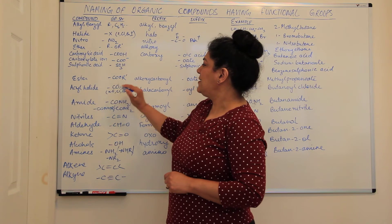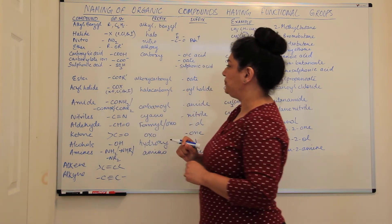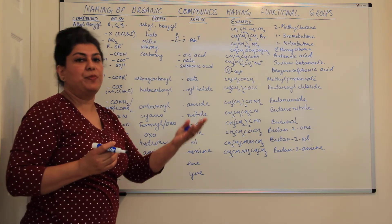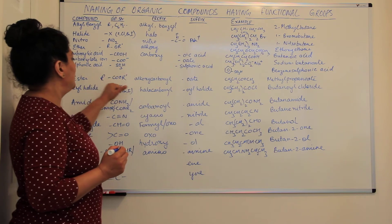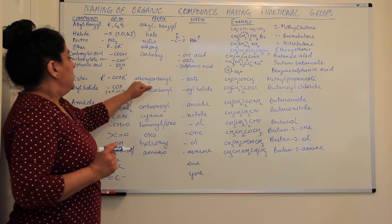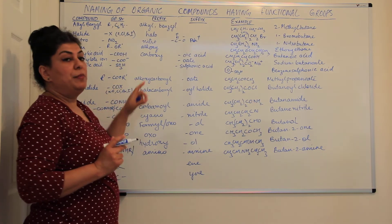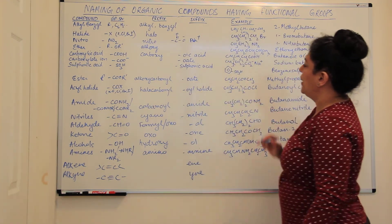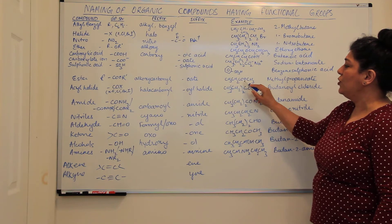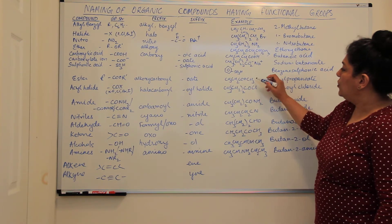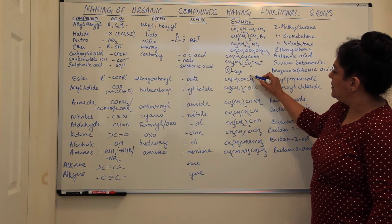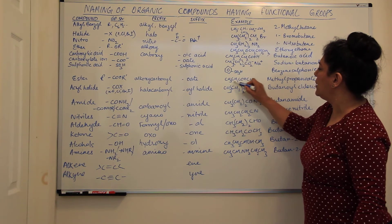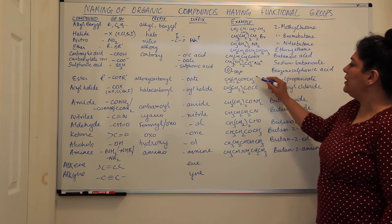The next group of compounds are esters. The functional group is COOR', where R and R' may be the same or different. Esters have the general formula RCOOR'. As a suffix, esters are written as 'oate'. For example, CH3CH2COOCH3 — the COOCH3 contains a methyl group attached to the parent hydrocarbon. Counting: one, two, three carbons in the parent chain — this is called methylpropanoate.